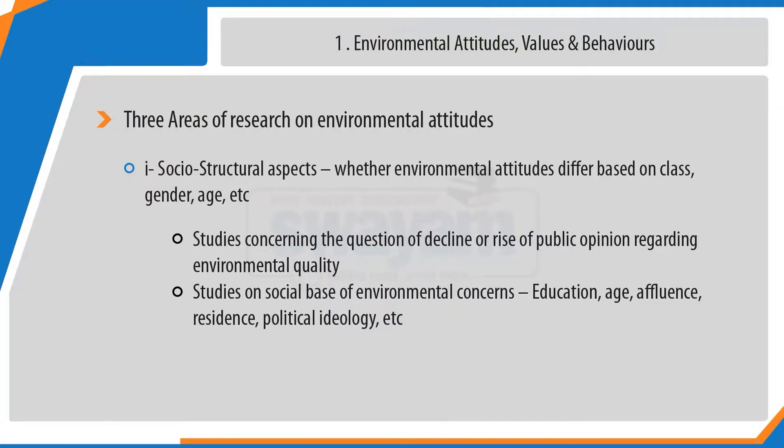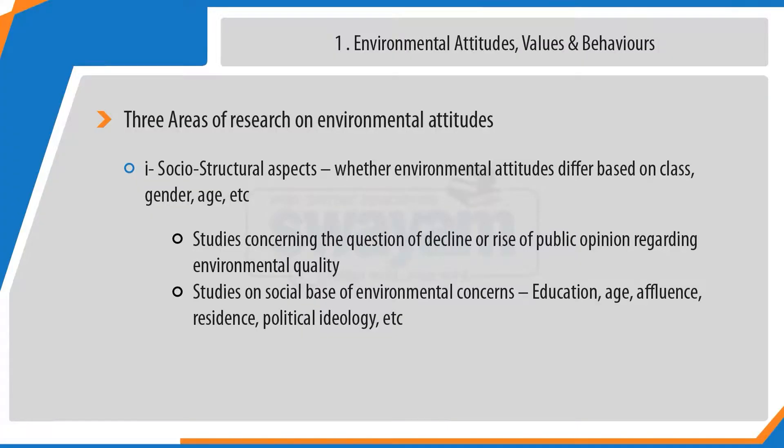Let us begin with the first area of research: environmental attitudes and values. Over the years, there have been three areas of research on environmental attitudes and values — the socio-structural, socio-psychological, as well as the applied research on environmental values. With regard to the socio-structural approach, there has been research on whether environmental attitudes differ based on class, gender, ethnicity, occupation, or place of residence. In other words, different structural aspects of society have been correlated with environmental values and attitudes.